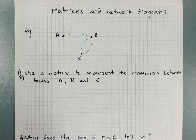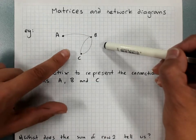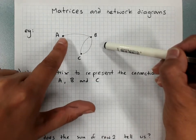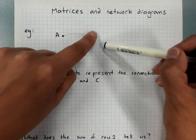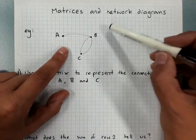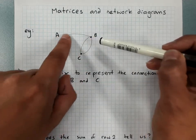Matrices and Network Diagrams. This is a network diagram. It's a collection of points or vertices, these are labelled A, B and C, and connections between them, lines which are known as edges.